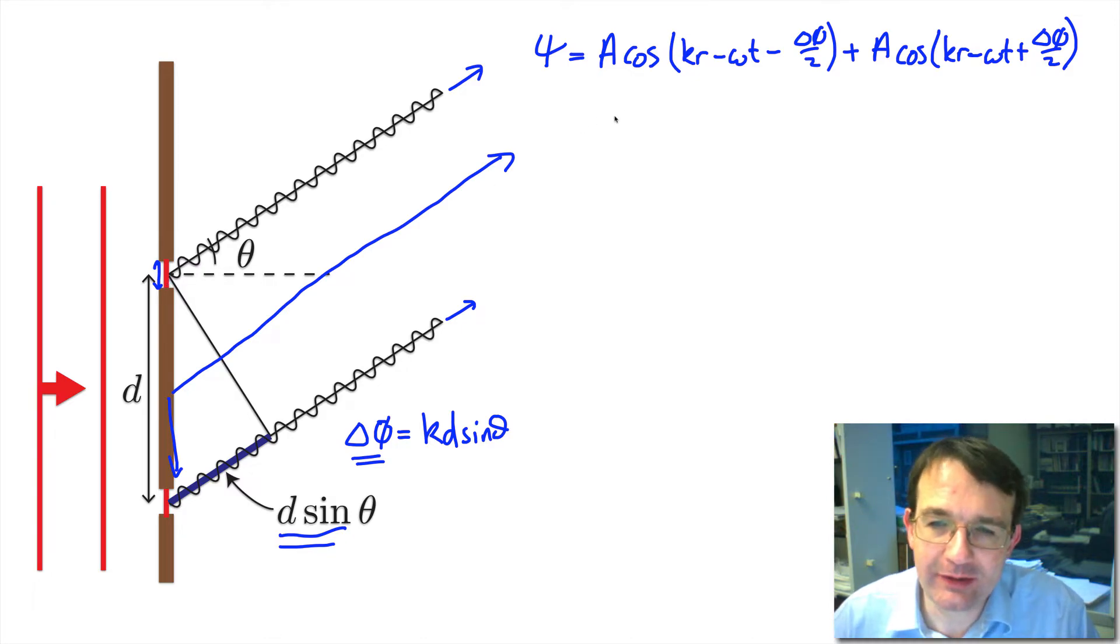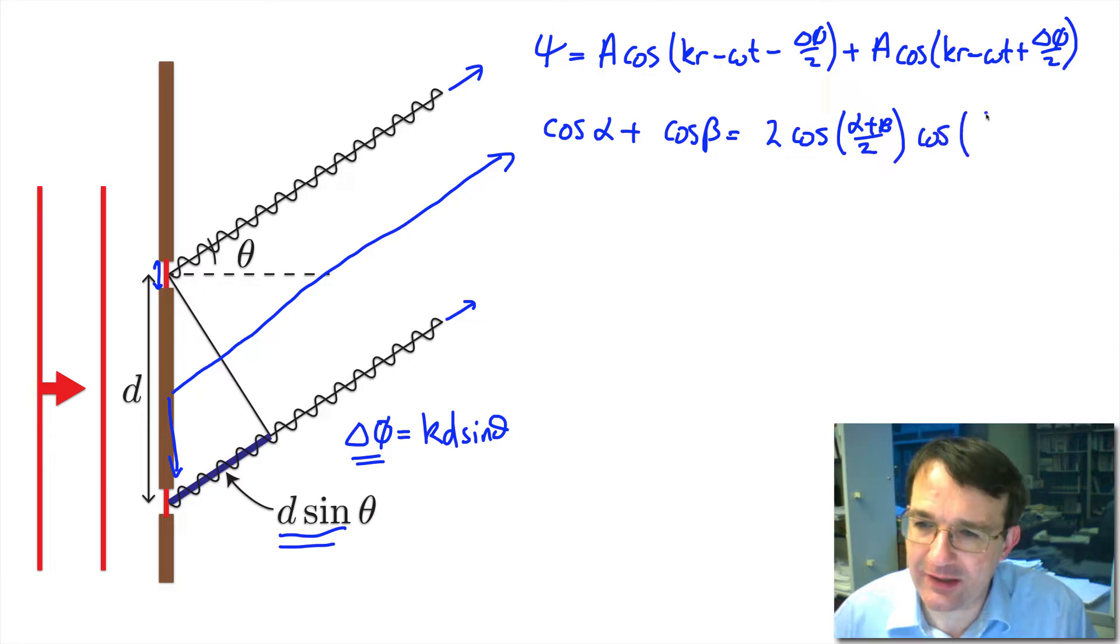We've got a trig identity to add two cosines together. The cosine of alpha plus the cosine of beta is equal to 2 times the cosine of alpha plus beta over 2 times the cosine of alpha minus beta over 2. We did this for beats and also when we were dealing with dispersion.